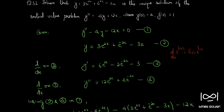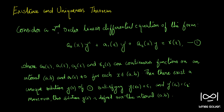For that, we need to apply the uniqueness theorem. For a second-order linear differential equation a₀(x)·y'' + a₁(x)·y' + a₂(x)·y = r(x), we can apply the existence and uniqueness theorem given certain conditions are satisfied. The conditions are: a₀(x), a₁(x), a₂(x), and r(x) must be continuous functions on a given interval [a, b], and a₀(x) must not be equal to 0 for any value of x in that interval.